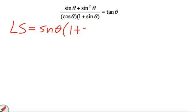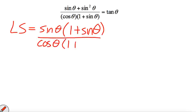well then you're actually pretty much done on the left side here. These two are going to cancel out, you'll end up with sine over cos, which is tan theta, and that's the right side.